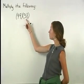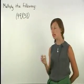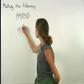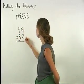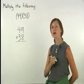To multiply 49 times 38, first line up 49 and 38 so that their units digits are in the same column.